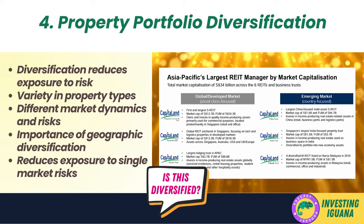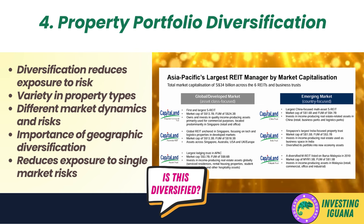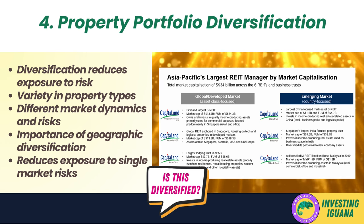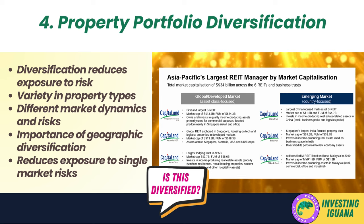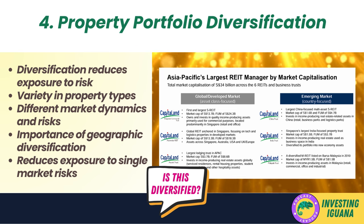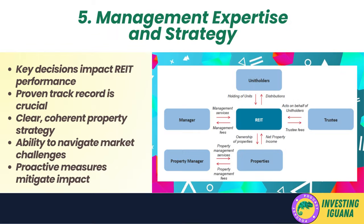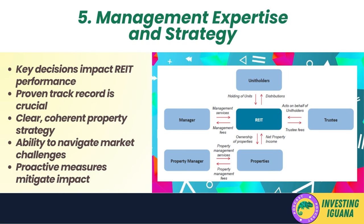By owning a mix of different property types, a REIT can spread its risk and potentially benefit from different market conditions. Geographic diversification is equally important — this involves owning properties in different cities, states, or even countries. Real estate markets vary greatly from one location to another due to factors like local economy, job growth, population trends, and government policies. By spreading properties across different locations, a REIT can reduce its exposure to any single real estate market and its associated risks.